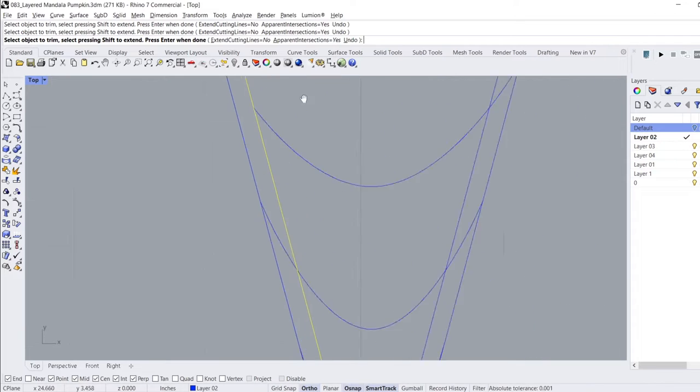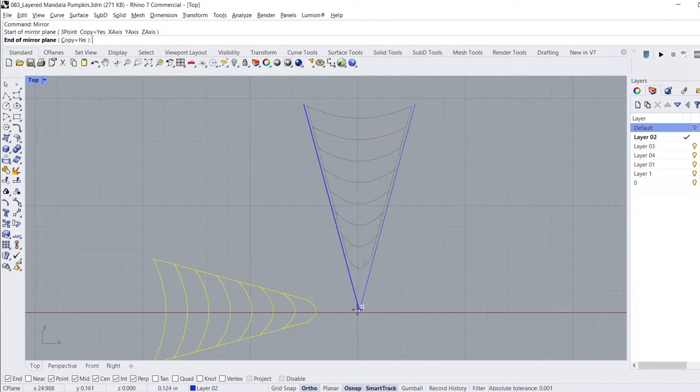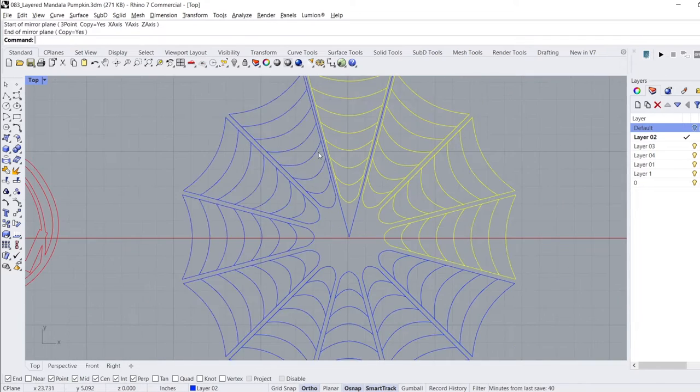Using the spline tool, I connected one point on each line which created the curve. I repeated this step until I had a curve drawn at each point.